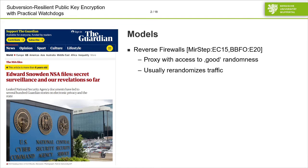One possible countermeasure are the so-called reverse firewalls, introduced by Mironov and Stephens-Davidowitz at Eurocrypt 2015. A reverse firewall is basically a proxy outside of a corrupted machine with access to good randomness. This machine then usually re-randomizes the traffic in order to remove any possible biases embedded in, for instance, signatures. It is usually the case that you use some re-randomizable primitive, but at SCN 2020, Boussard et al. showed that there are ways around this, so you don't necessarily need re-randomizable primitives.